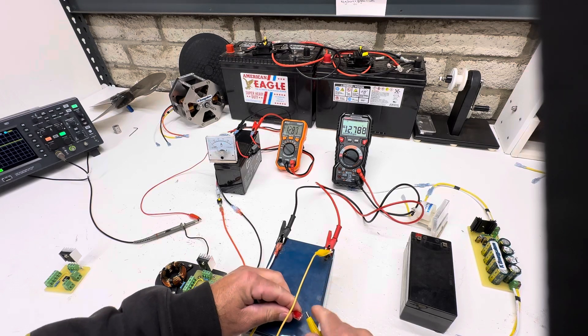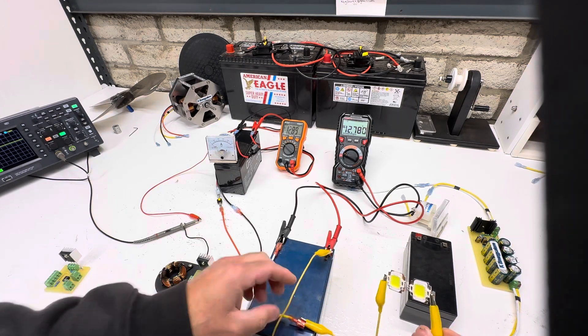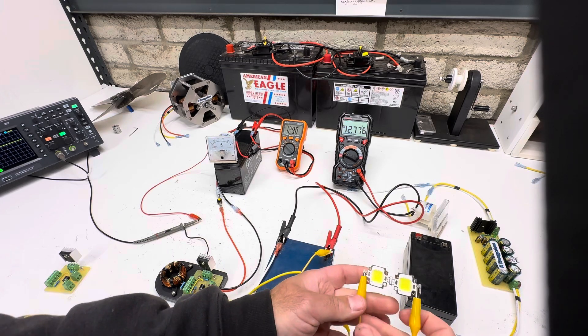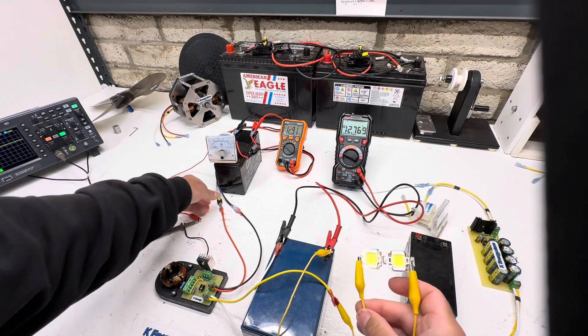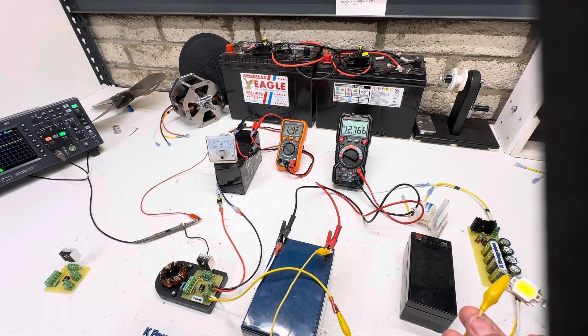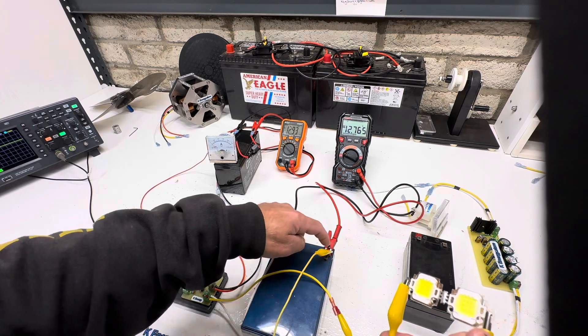Now what I'm doing is these are two 10 watt LEDs and they're soldered in series. When we turn this on, this is going from the charger through the LEDs and then back to the battery.